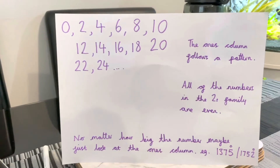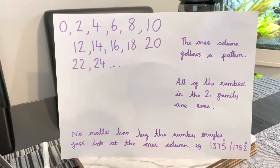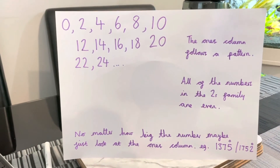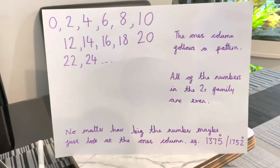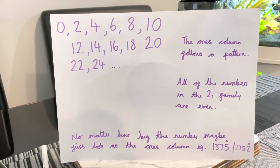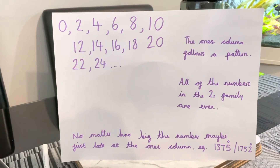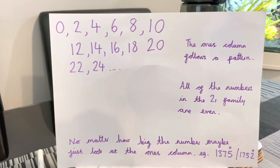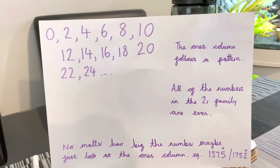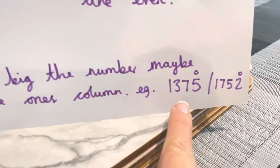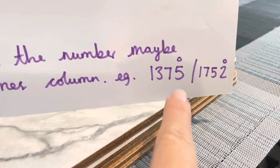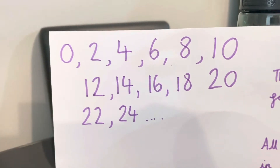Because when we count in twos the ones column follows a pattern. If you know two, four, six, eight, ten, then you will know the rest of the numbers in the twos family. All of the numbers in the twos family are even, which means we can share them between two. And no matter how big the number may be you just have to look at the ones column. So for example a big number like one thousand three hundred and seventy-five we know that wouldn't be in the twos family because it has a five in the ones column and that isn't in our two, four, six, eight or zero.